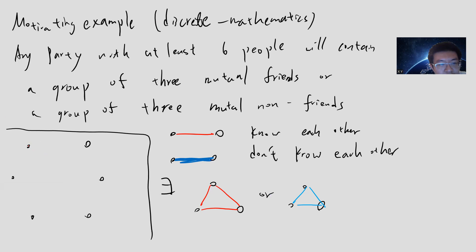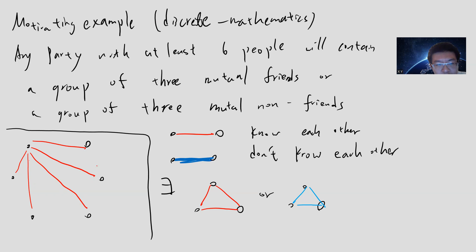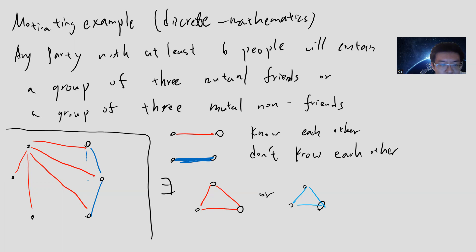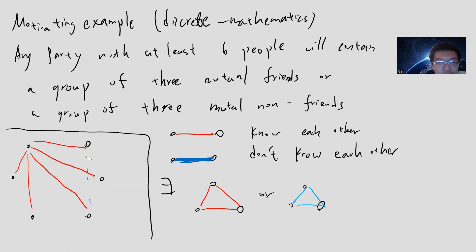So without loss of generality, I can start from here. If all these edges are red, then these two cannot be red, right? Because if I don't want to have a red triangle, then these two cannot be red. Then I will draw these two to be blue. Then these two will also be blue, but these two cannot be blue - if these two are blue, then they will form a blue triangle. But these two cannot also be red, otherwise there will be a red triangle. So we should finish the proof. That means my first assumption is incorrect.